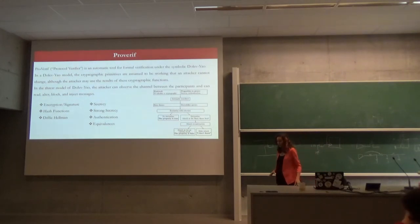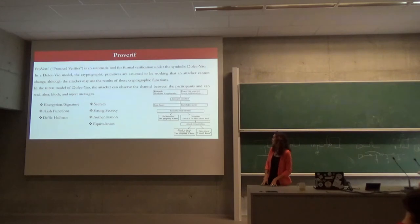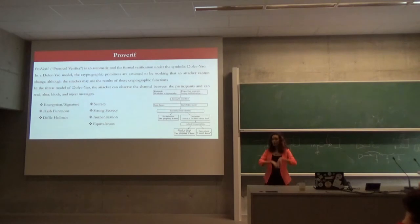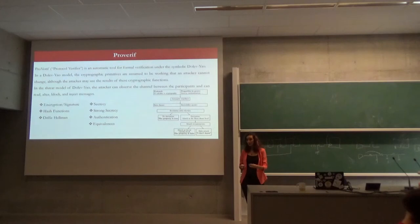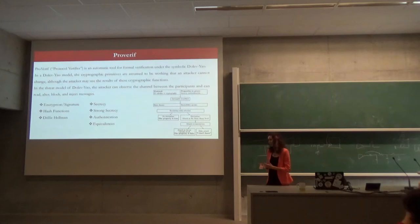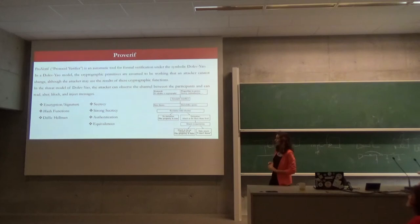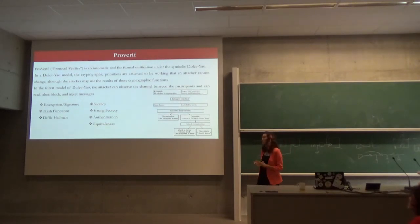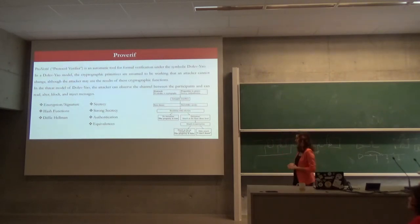To do the formal verification, we worked with ProVerif. ProVerif is an automatic tool under the symbolic model. We chose this tool because we're looking at the entire protocol — we don't look at the cryptographic primitives, and we assume that these primitives are perfect. The spec uses very well-known primitives, and the Dolev-Yao model lets us do this. With ProVerif, we can model encryption, signatures, hash functions, and Diffie-Hellman. We can prove several properties like secrecy, authentication, and equivalence.